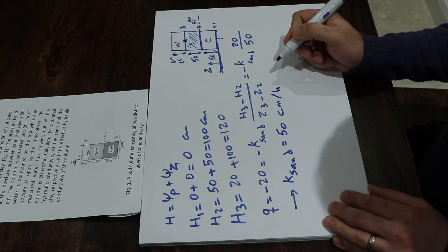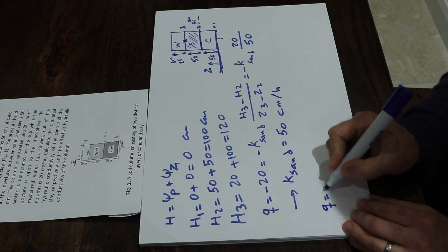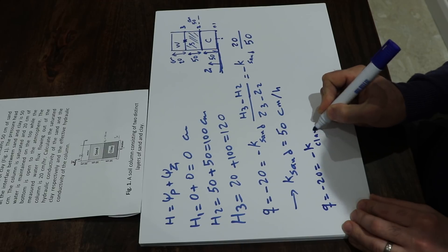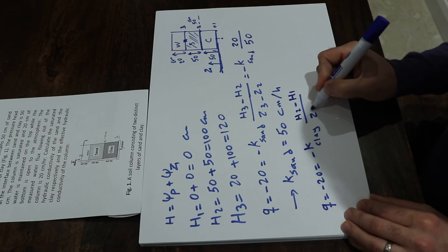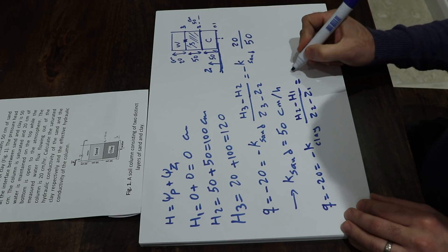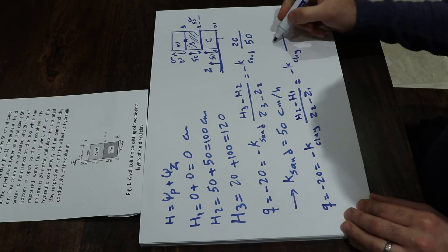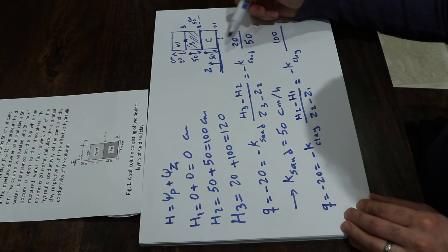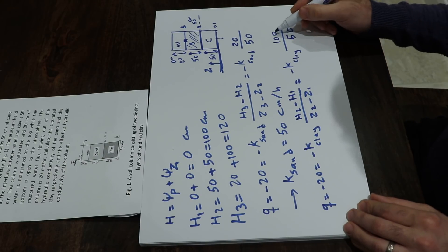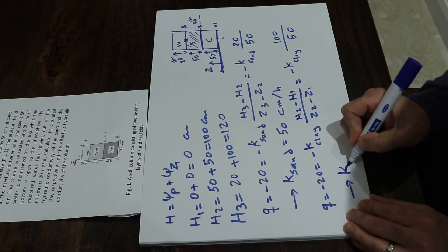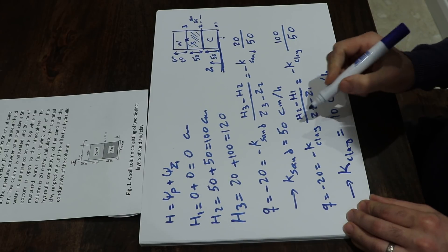For the clay layer, applying Darcy's law: q equals minus 20 equals minus K_clay times (h2 minus h1) divided by (z2 minus z1), which equals minus K_clay times (100 minus 0) divided by (50 minus 0). So minus 20 equals minus K_clay times 100 over 50, therefore K_clay equals 10 centimeters per hour.